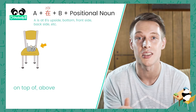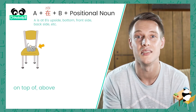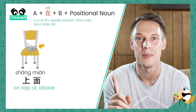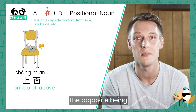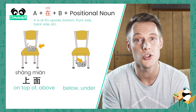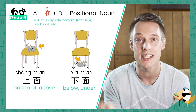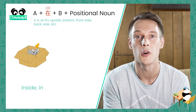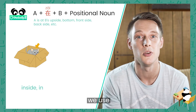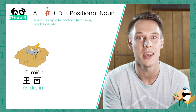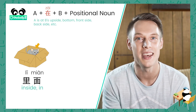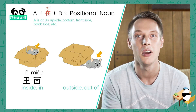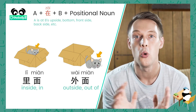Knowledge of the basic positional nouns is important for describing where something or someone is. In Chinese, on top of or above is 上面. The opposite, below or under, is 下面. For inside or in, we use 裡面. And for outside or out of, we say 外面.